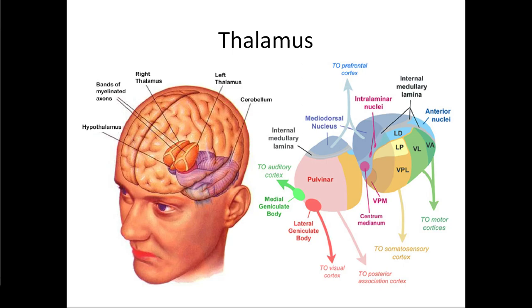We have a lot of different sensory stimuli going through the thalamus. Auditory stimuli come through here on the way to the auditory cortex, visual stimuli to the visual cortex, and so on. We also have the anterior area that is basically part of our limbic system — part of our emotional system. That limbic system is the emotional control center, and we'll talk more about that in a moment.